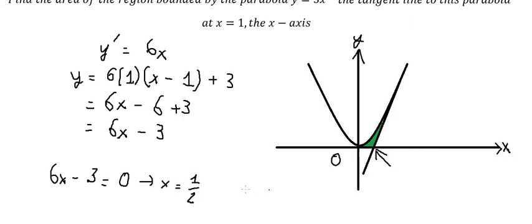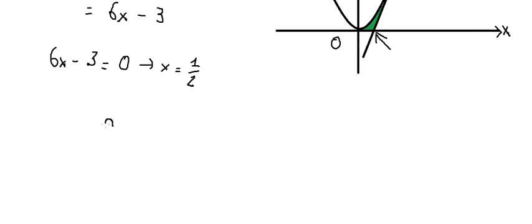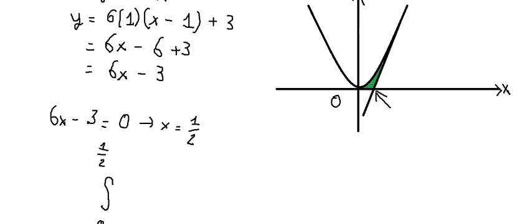So we have 2 intersections. The first one from 0 to 1 over 2. This is only about the area of parabola in here.